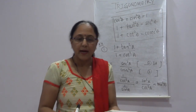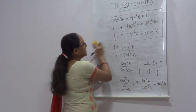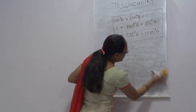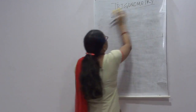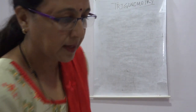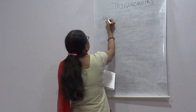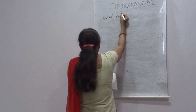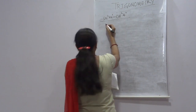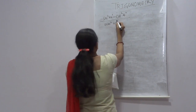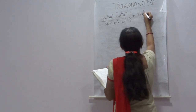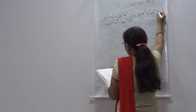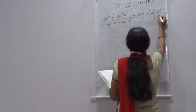Now we move to the next question, which is very important. I see that every year this question is asked in board exams. The question is: tan²33° + 2sin²38° · sec²52° − sin²45°.